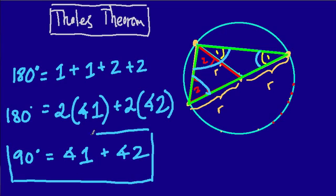And we're done. Why? Well because angle one and angle two is right here, and if that's 90 degrees, these two angles combined, then the green triangle must be a right triangle.